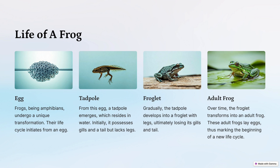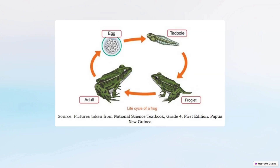Now let's go over the life cycle of a frog. Frogs are amphibians that undergo a unique transformation. Their life cycle begins from an egg, from which a tadpole emerges. The tadpole lives in water and initially has gills and a tail but lacks legs. Gradually the tadpole develops into a froglet with legs, ultimately losing its gills and tail, eventually transforming into an adult frog.